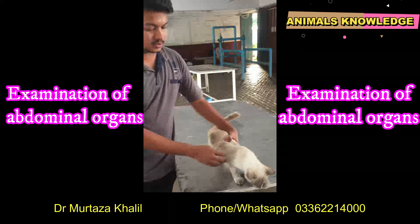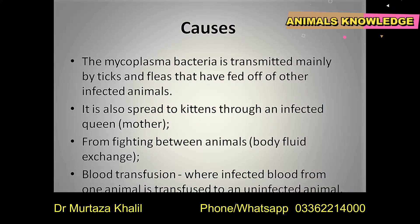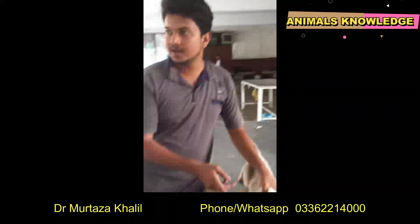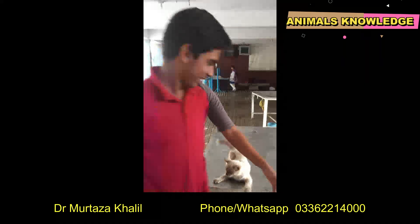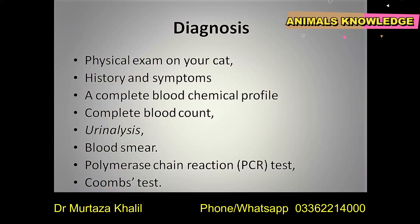You can palpate the kidney on both sides, and in this disease both kidneys are affected. Regarding the causes: as described earlier, mycoplasma bacteria is the causative agent for Hemobartinella, transmitted mainly by ticks and fleas that have fed off an infected animal. It can also spread to kittens through an infected queen from the mother.